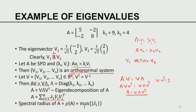Now we come to another important concept: the spectral radius, denoted rho(A). The spectral radius equals the maximum of the absolute values of the eigenvalues. If A is symmetric, the lambdas are real. If A is symmetric and positive definite, the lambdas are real and positive. The spectral radius of a symmetric matrix is thus the maximum absolute eigenvalue.